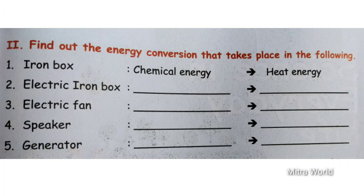Second one: electric iron box. Electric energy is converted into heat energy. Third one: electric fan. In an electric fan, we give electric energy. That energy is converted into kinetic energy — that is rotation, which is kinetic energy, also called mechanical energy. Electric fan: electric energy is converted into kinetic energy.